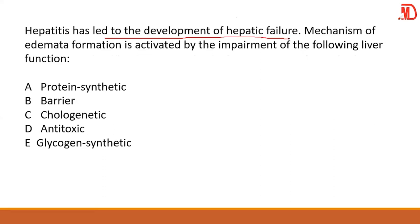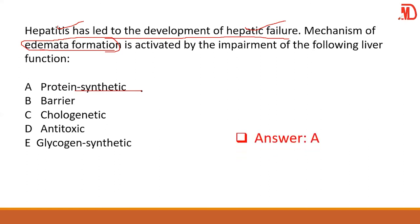Hepatitis led to the development of hepatic failure — inflammation of the liver led to its failure. The mechanism of edema formation here involves a direct injury to the liver (absolute), leading to hypoproteinemia because protein synthesis is affected. Since the liver is directly affected, we have absolute hypoproteinemia. Here we are thinking of A — protein synthesis is what is affected.